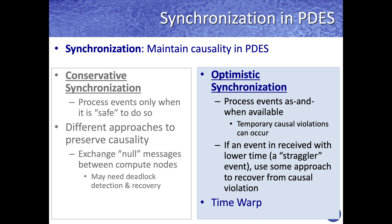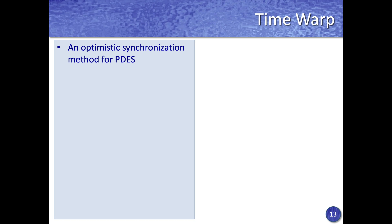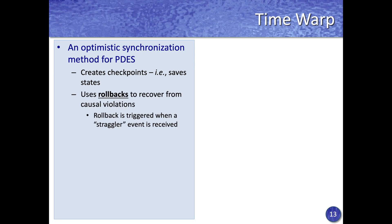Time warp is a commonly used algorithm for optimistic synchronization. In a time warp synchronized parallel simulation, each logical process creates checkpoints or saves its state. Causal violations are detected when a straggler event is received, and the LP uses a process called rollback to recover from causal violations.